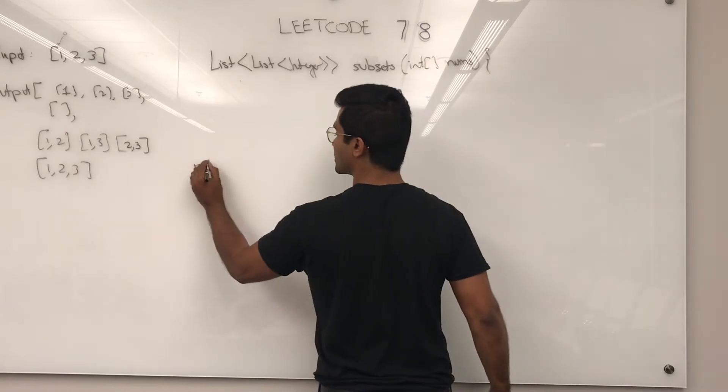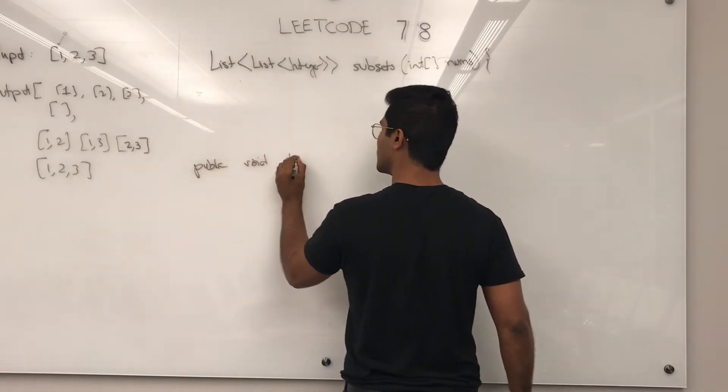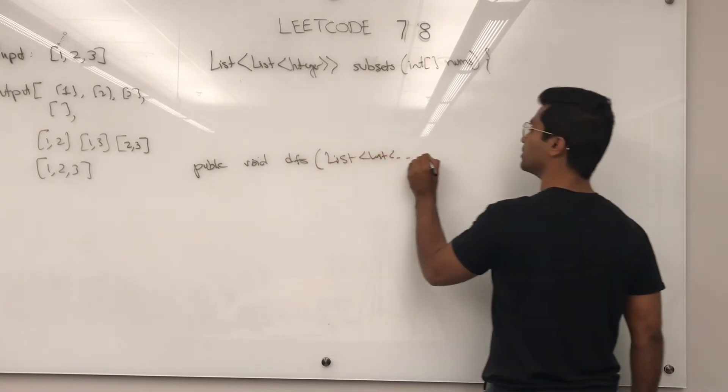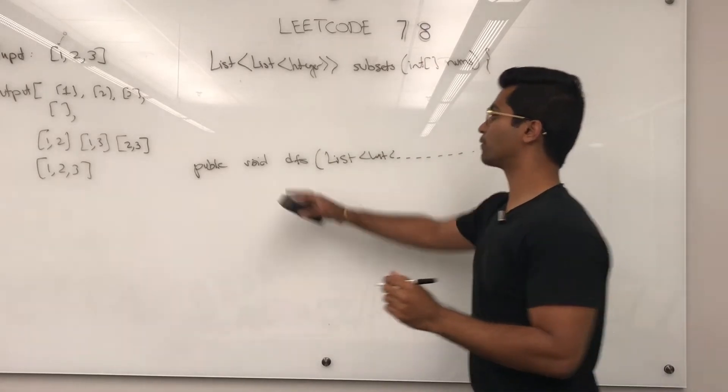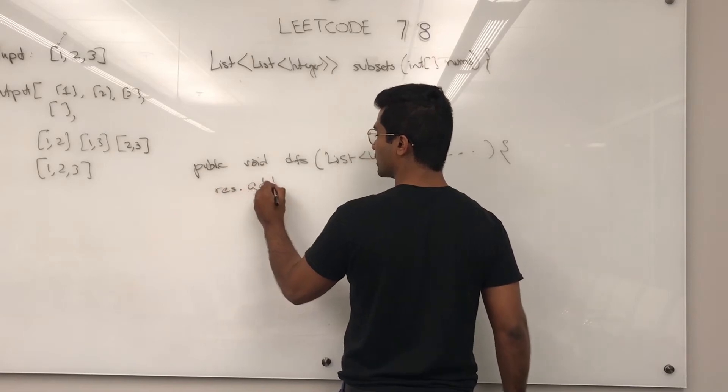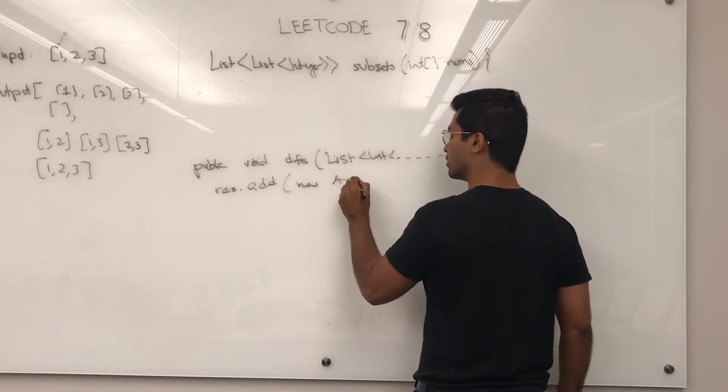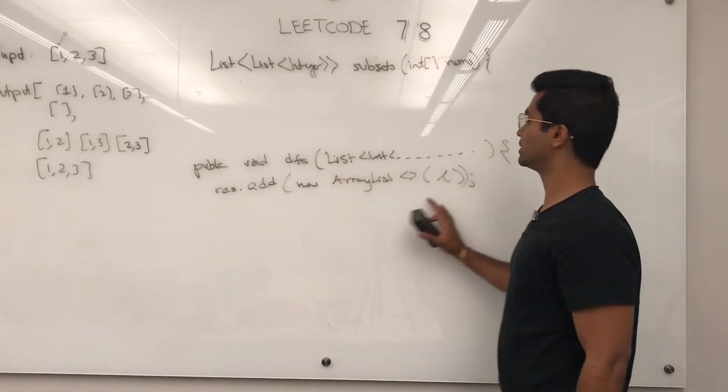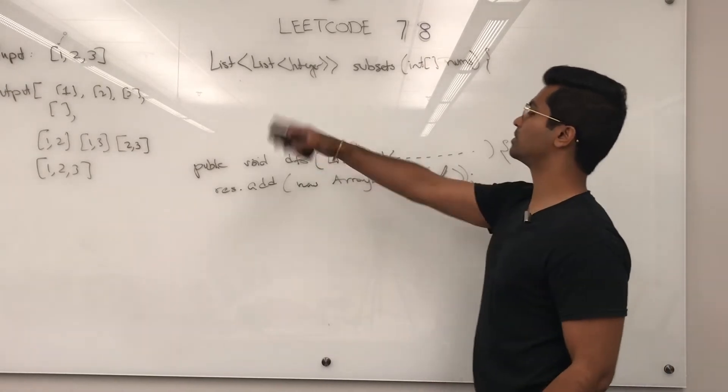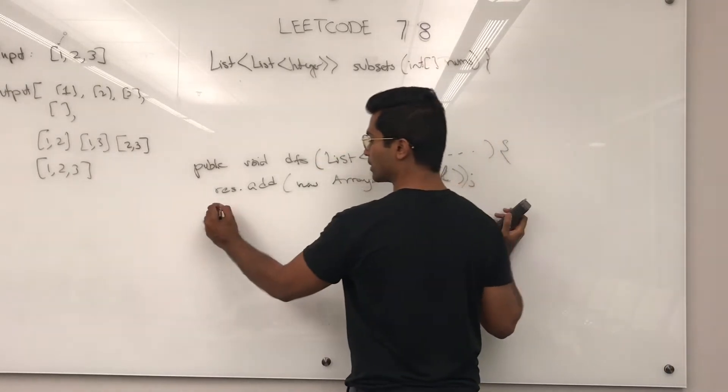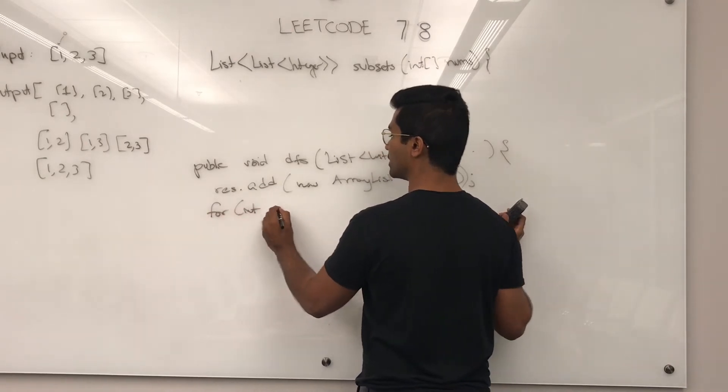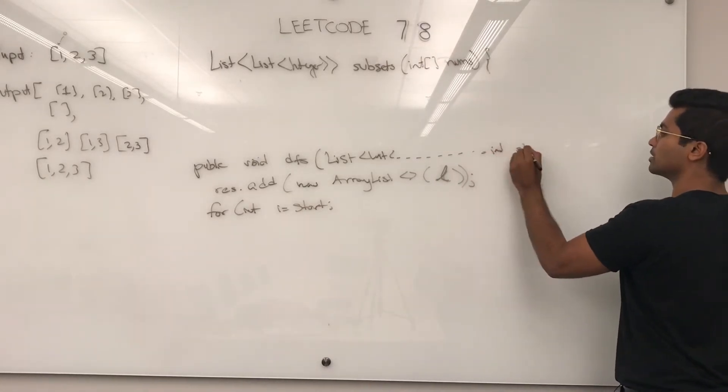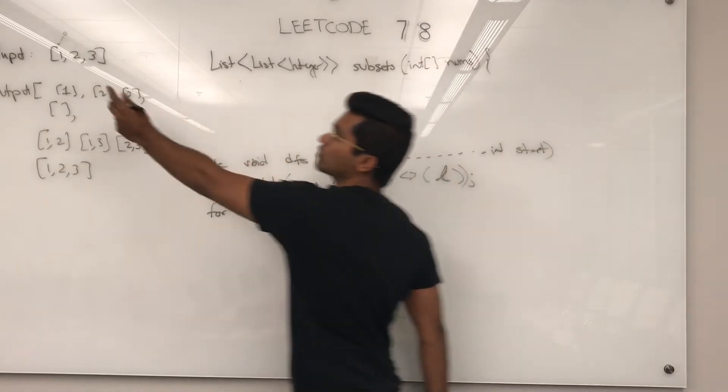Now let's write our DFS, public void DFS, list of list of int. And first what we're going to do is add the empty set, res dot add new array list. We're using the constructor of array list. L is going to be the empty set that we passed in. Now the first thing we're going to do is for int i is equal to start. Start is a zero that we passed in, so int start is going to be the index zero that we passed in the front.